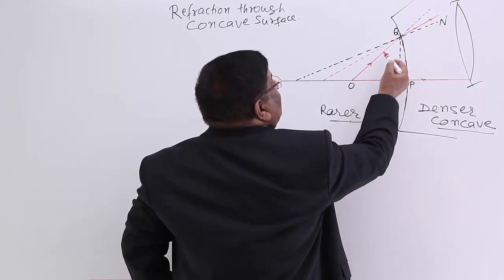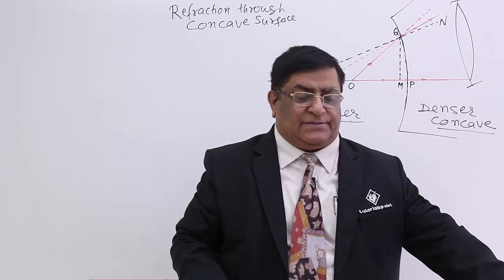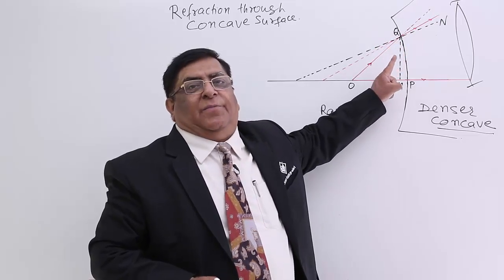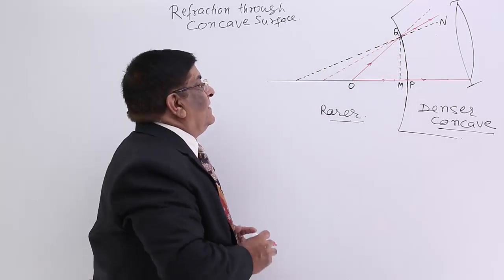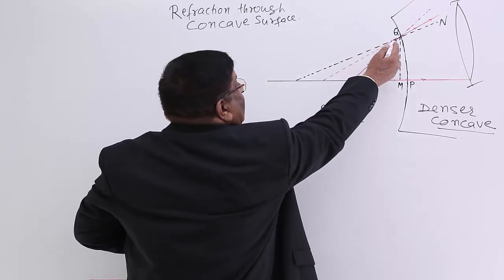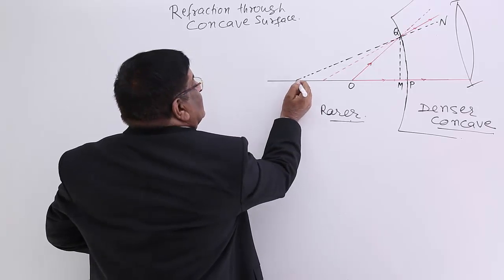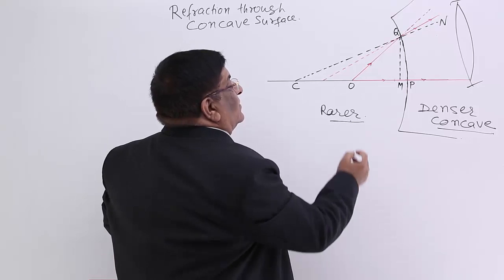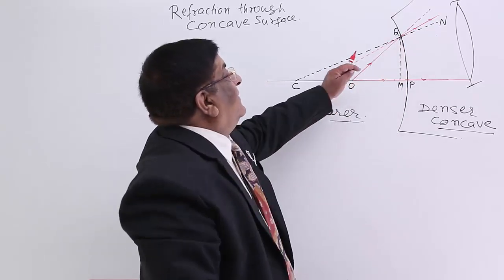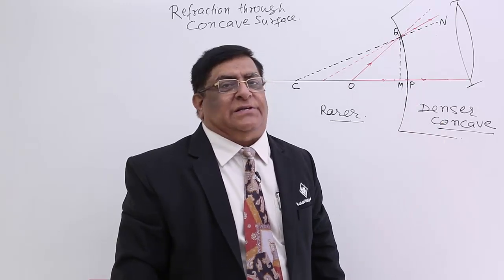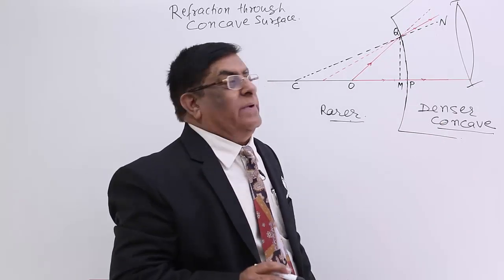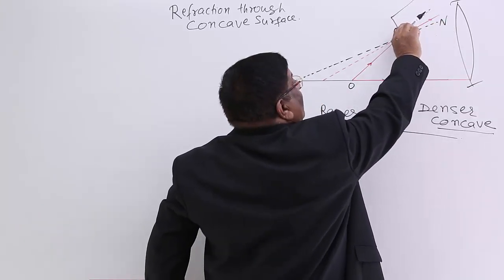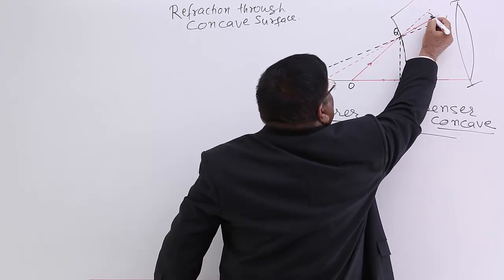The other ray goes towards a point Q on the surface. When it strikes at point Q, to find out its direction we draw a normal here. The normal is always a line joining this point to the centre of curvature. Now this is the incident ray. After going into the denser medium, it will bend towards the normal. This is the original direction and this has bent towards the normal.